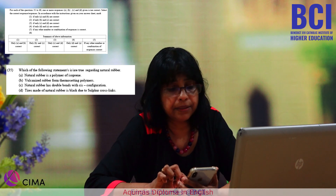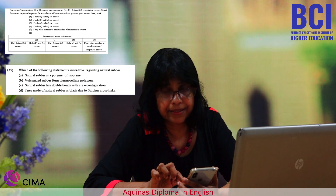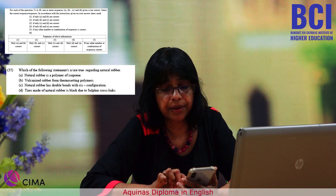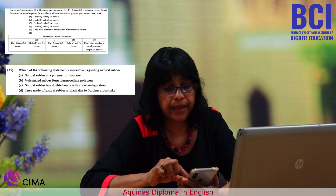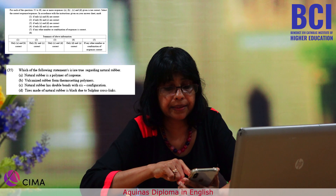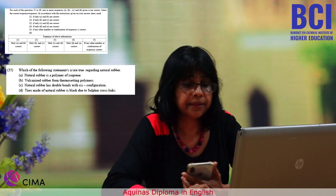Question thirty-five: true statements about natural rubber. Natural rubber is a polymer of isoprene — correct. Vulcanized rubber forms thermosetting polymers due to sulfur cross-links — correct. Natural rubber has double bonds with cis configuration — correct. Tires made of natural rubber are black due to sulfur cross-links — incorrect; the black color is due to added carbon black as a filler. Answer: A, B, and C.